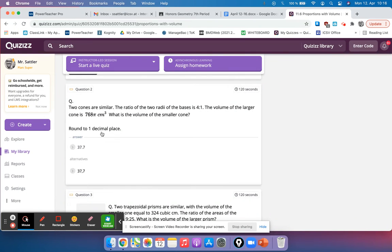Okay, so two cones are similar. We know the ratio of the two radii is four to one. So that's what we're going to take that ratio.